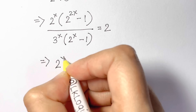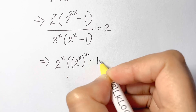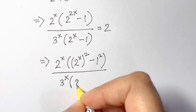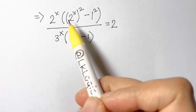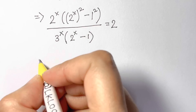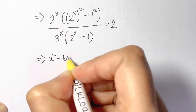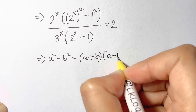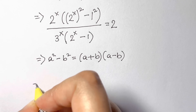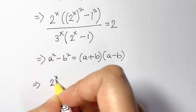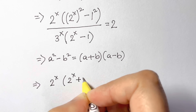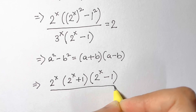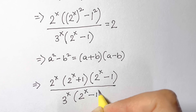Now we write it as 2 to the power of x times [(2 to the power of x) squared minus 1 squared], over 3 to the power of x times (2 to the power of x minus 1), equals 2. We have an a squared minus b squared identity here, so we write a squared minus b squared equals (a plus b)(a minus b), and substitute back: 2 to the power of x times (2 to the power of x plus 1)(2 to the power of x minus 1), over 3 to the power of x times (2 to the power of x minus 1), equals 2.